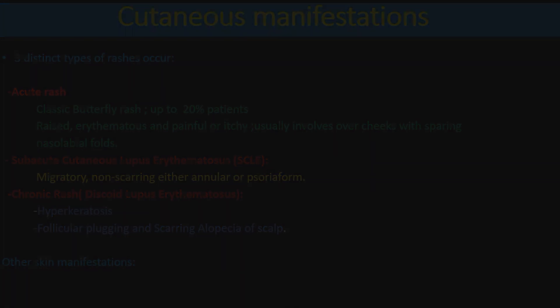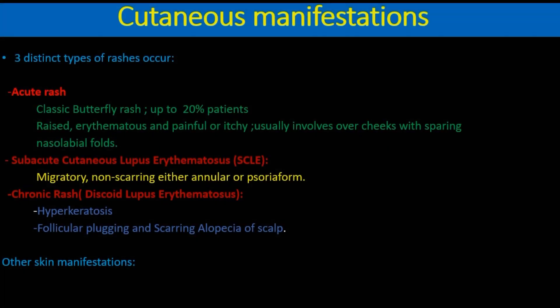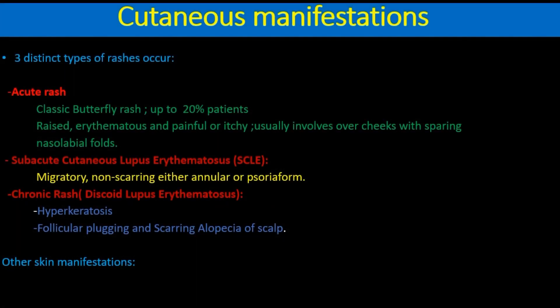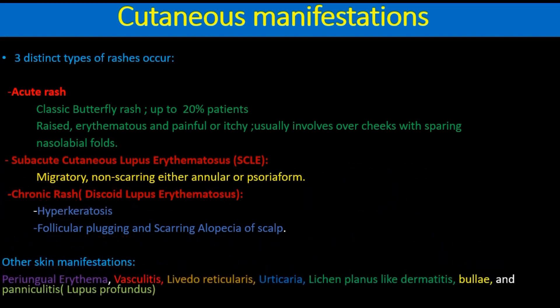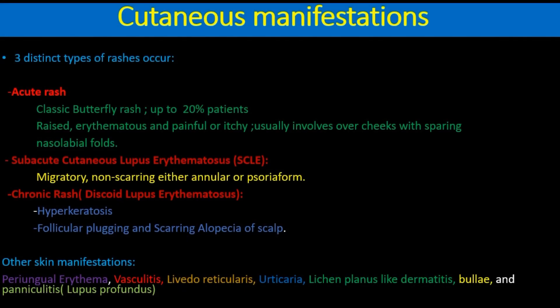Subacute rash is migratory, non-scarring, either annular or psoriasiform. The chronic rash includes hyperkeratosis, follicular plugging, and scarring at the face and scalp. Other skin manifestations may include periungual erythema, vasculitis, livedo reticularis, urticaria, lichen planus-like dermatitis, bullae, and panniculitis. There may also be photosensitivity and oral ulcers.